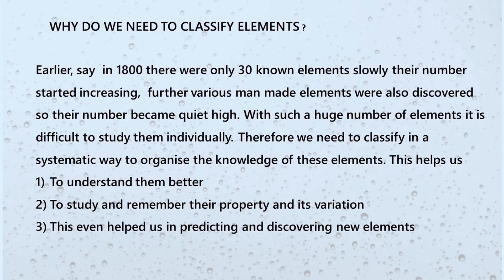The attempts at classification started very early. In the beginning of the 18th century, when there were around 31 elements, the first attempt was made by Lavoisier, who classified the elements into metals and non-metals. But that was too general, and therefore it was discarded. After that, the number of elements started growing as new elements were discovered, which made it extremely difficult to study them individually. Therefore, the need for classification became very important.